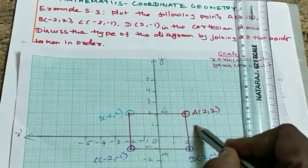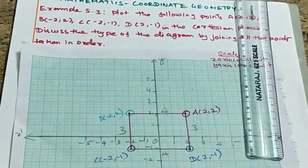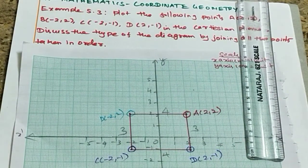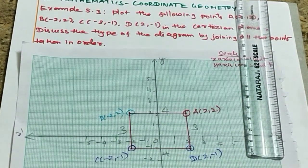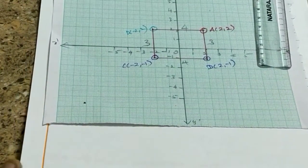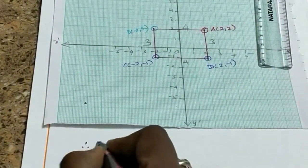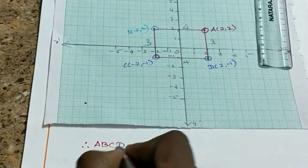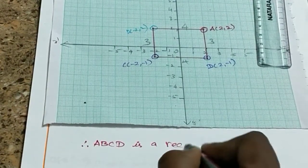The opposite sides are equal, it is a rectangle. So the answer is therefore ABCD is a rectangle.